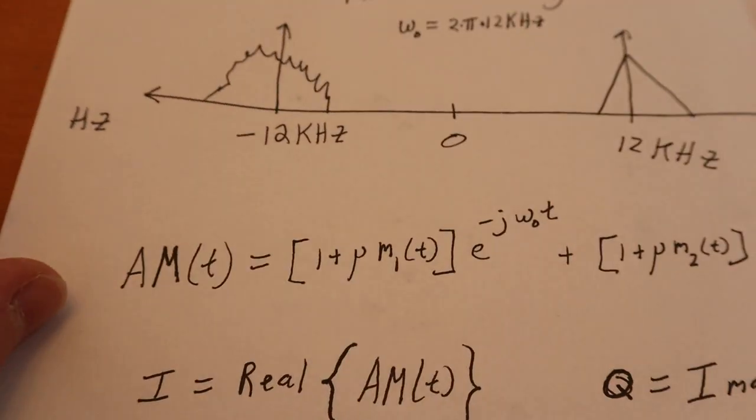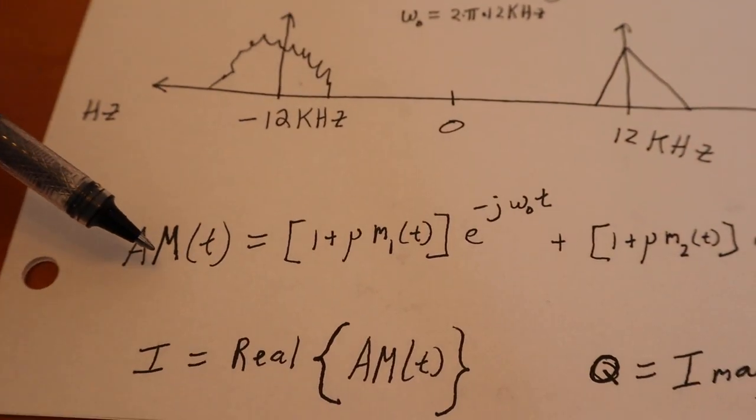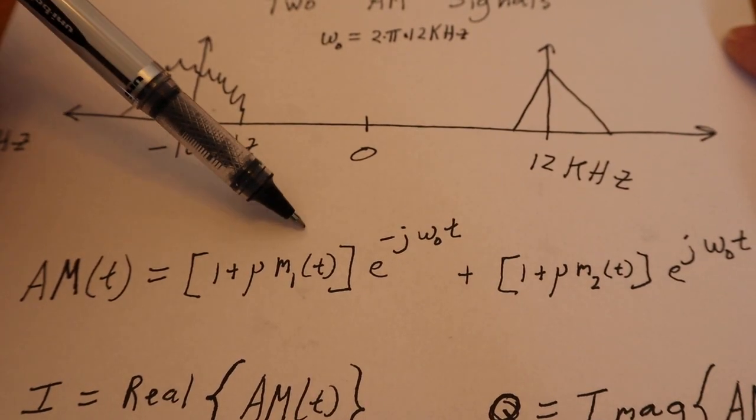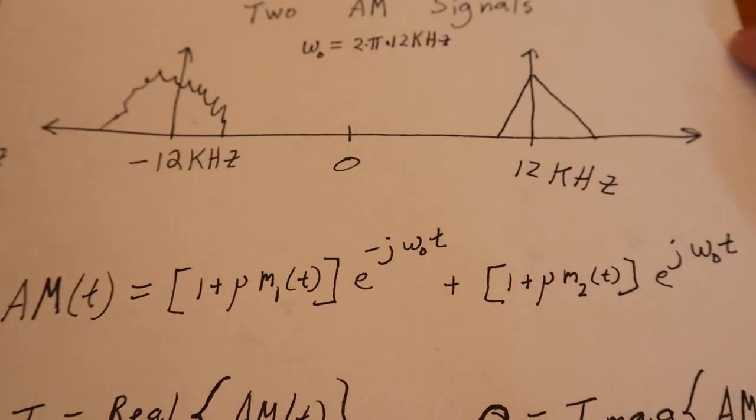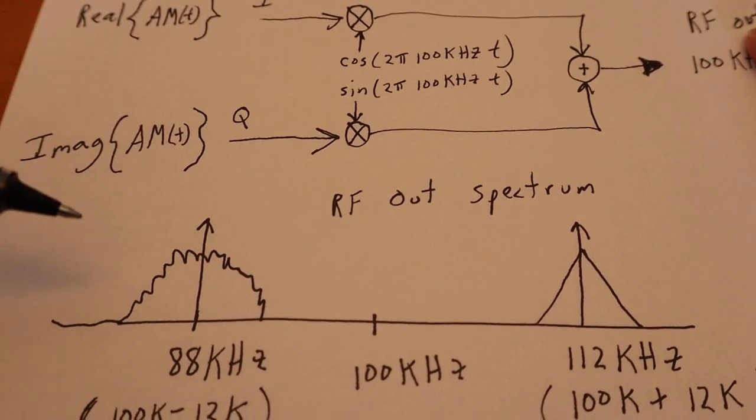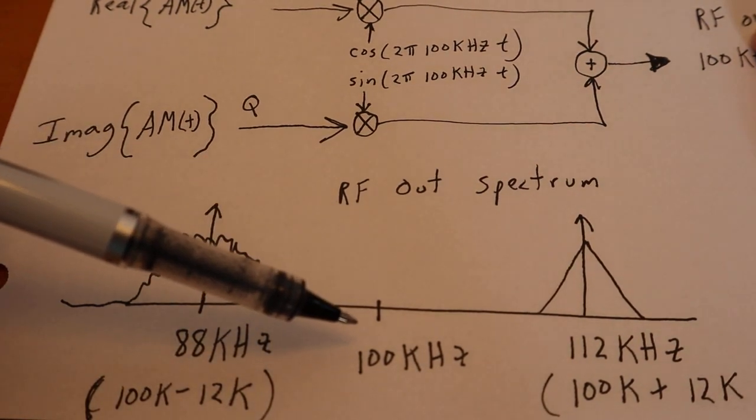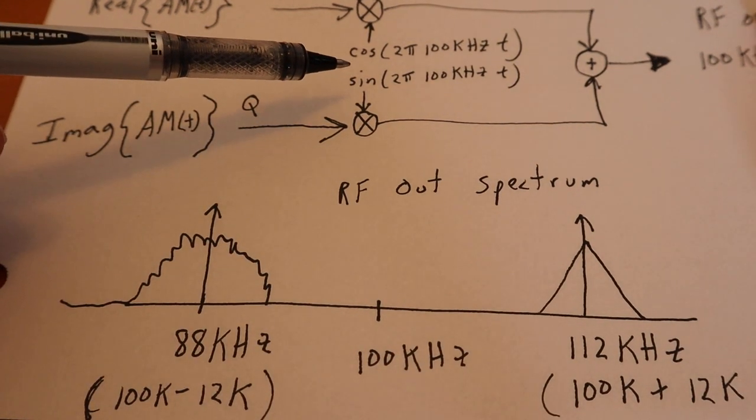So I hope this explains how we took those AM equations that I was talking about, namely these guys here, how we take this abstract equation with these complex phasors in them and actually get a real valued signal here,